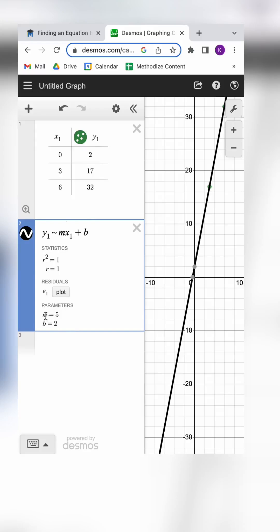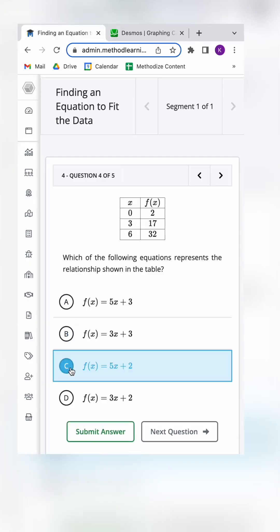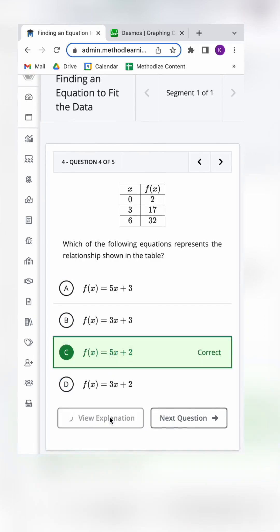So we see down here it automatically tells us our m value is 5 and our b value is 2, giving us an equation of y equals 5x plus 2, and we see that in answer C which is correct.